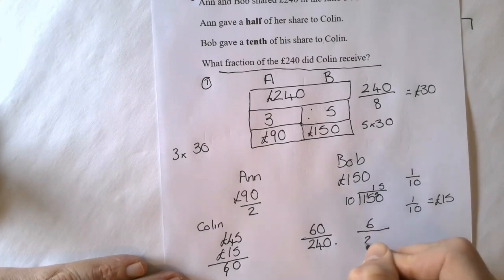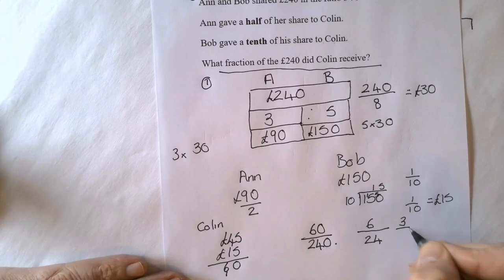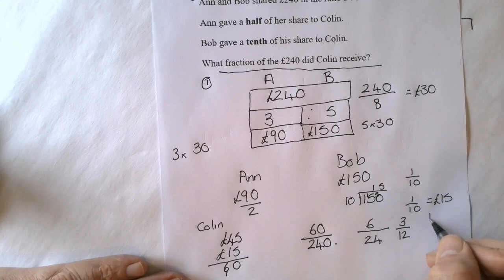People have got different methods of doing this. I always like to remove a 0 off the top and the bottom if you can. So if you can see that one, which is 6 over 24. Then depending on which times table, I know that half of 6 is 3 and half of 24 is 12. Then how many 3s go into 3? That will give you 1. How many 3s go into 12? That's 4.